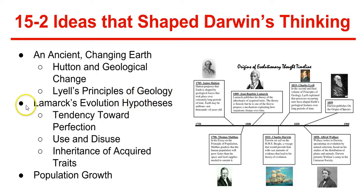Next, Lamarck's Evolution Hypothesis, published in 1809. He published his theory on the inheritance of acquired traits. Although his theory is flawed, he was one of the first to propose a mechanism explaining how organisms change over time. He proposed that by selective use or disuse of organs, organisms acquired or lost certain traits during their lifetime, and these traits could then be passed on to their offspring. Over time, this process led to a change in species. He had three main points: tendency towards perfection, use and disuse, and inheritance of acquired traits.